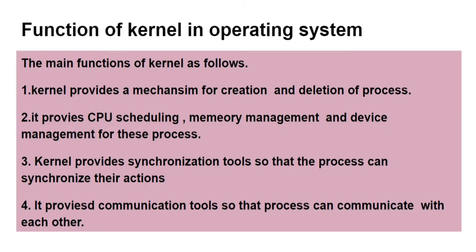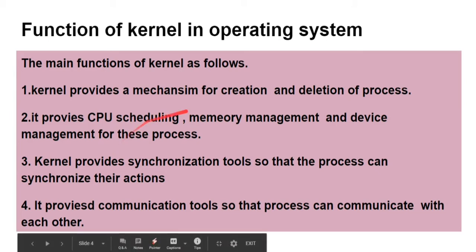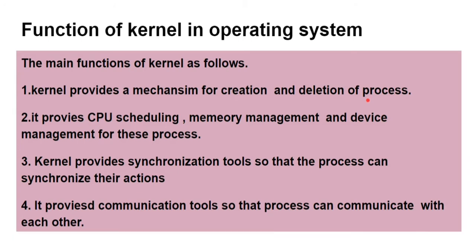What are the different functions of kernel? The main functions of kernel are as follows. Number one, kernel provides a mechanism for creation and deletion of a process. Process is one of the most important part of operating system and is managed by the operating system — we call it process management. Kernel provides a mechanism for how we can create and delete a process, which is a very basic function of a computer system.